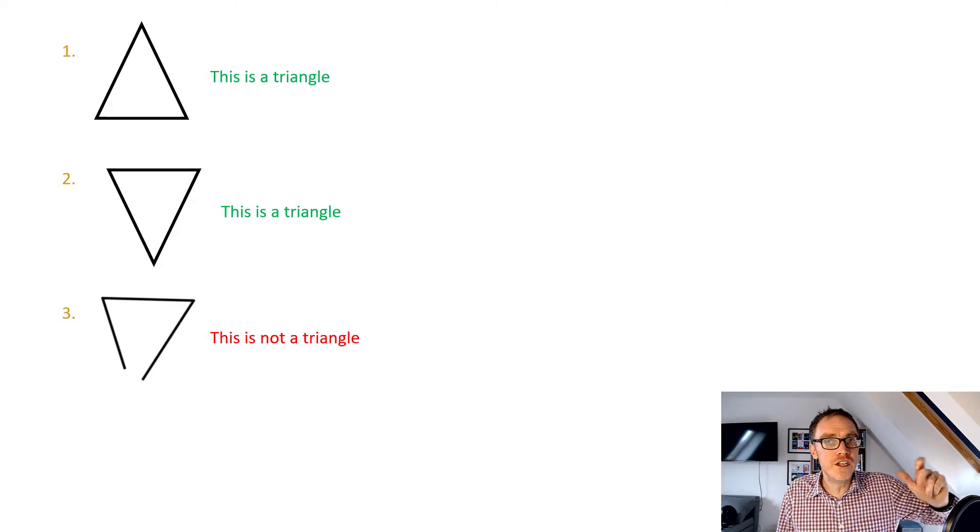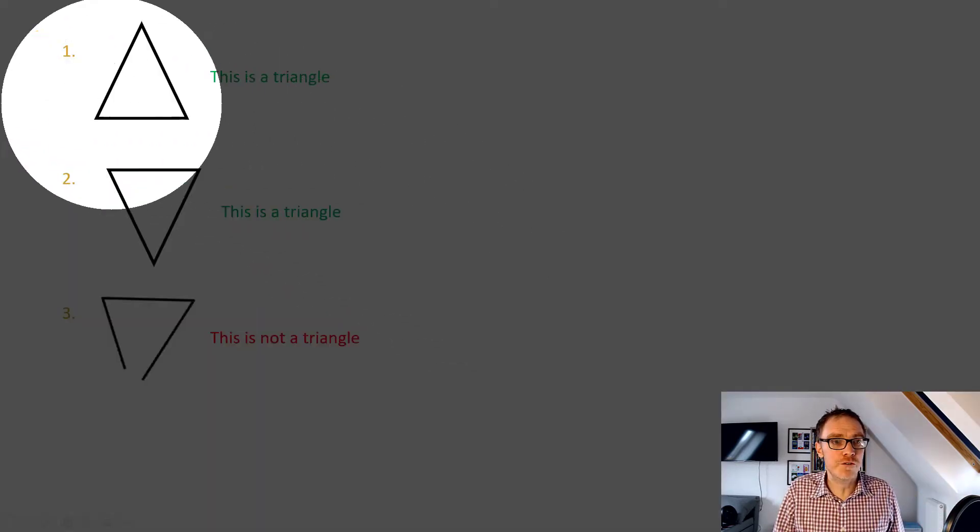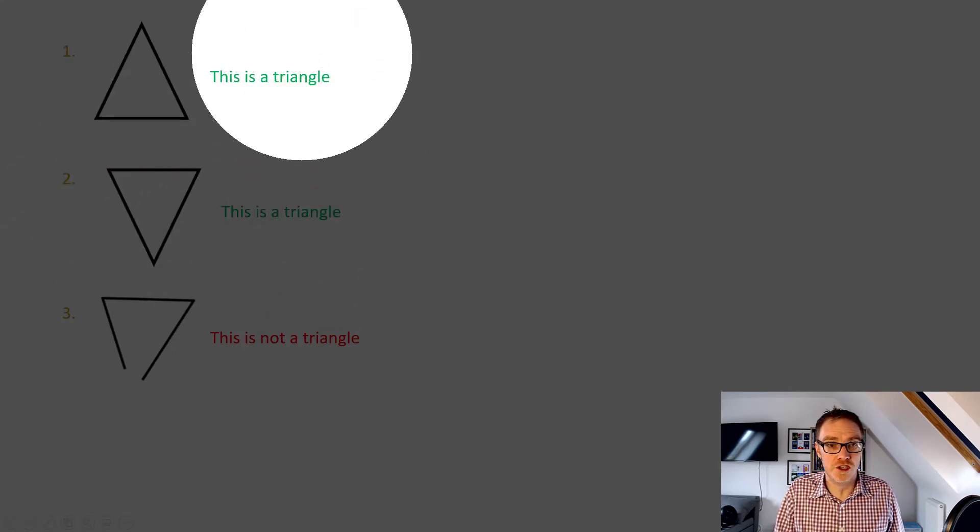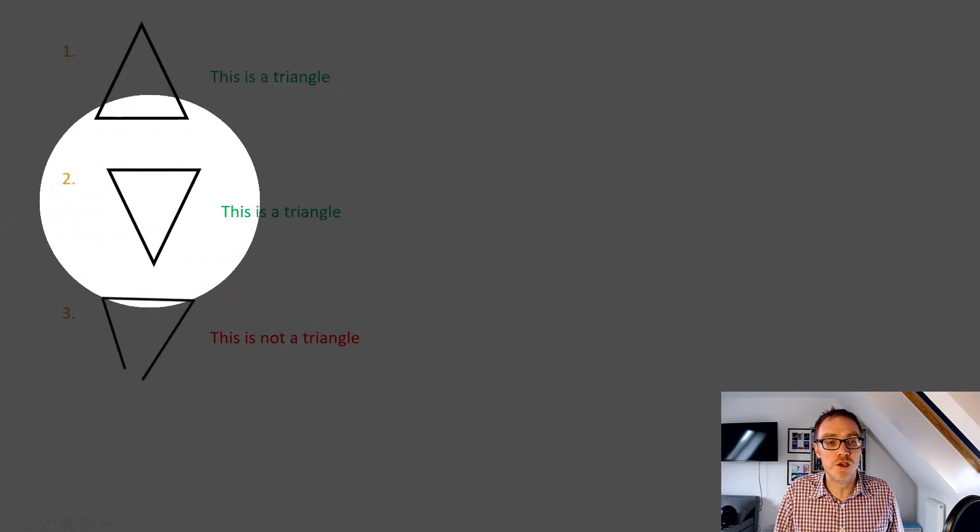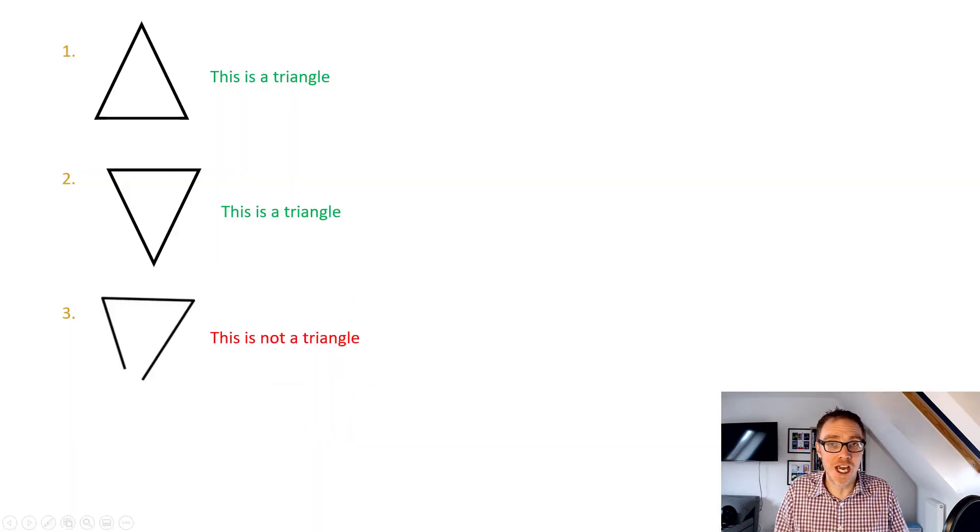What critical features changed and what impact has that had on the concept? So the critical feature between one and two didn't change, it was still a triangle. When the critical feature between two and three changed, it did change whether it fit inside the family of being a triangle. And then I'd carry on.